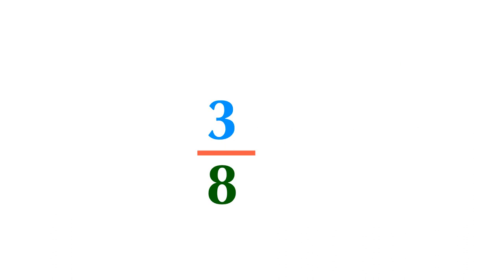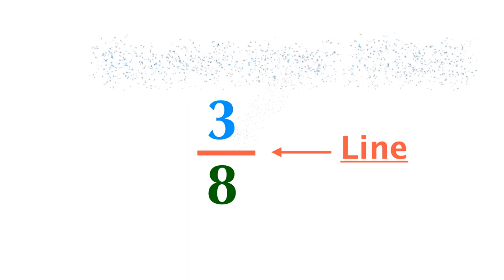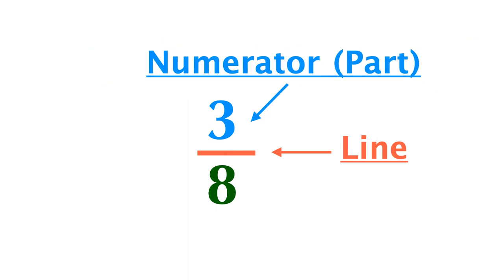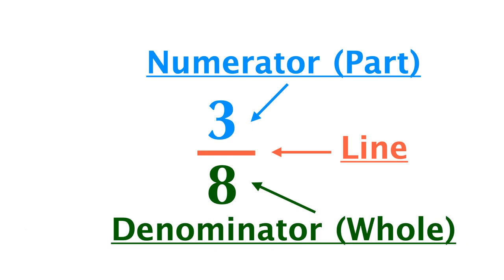Fractions have two numbers with a line in the middle. The top number is called numerator. The numerator represents a part and how many of the parts we are taking. The bottom number is called denominator. The denominator represents a whole and how many equal parts the whole is divided into.